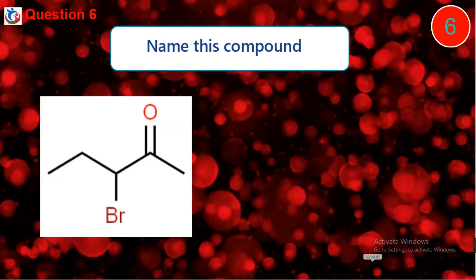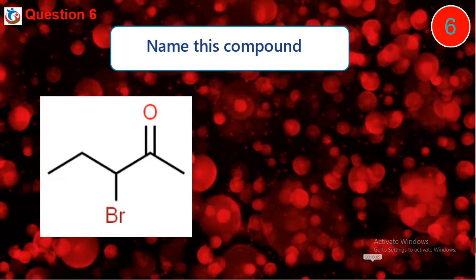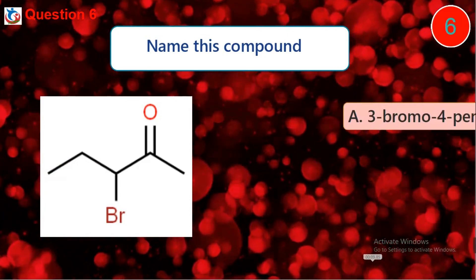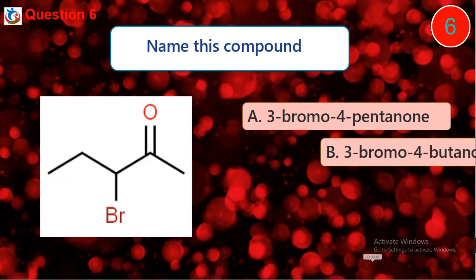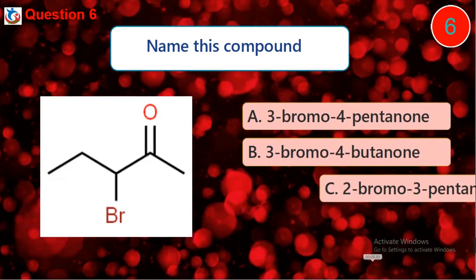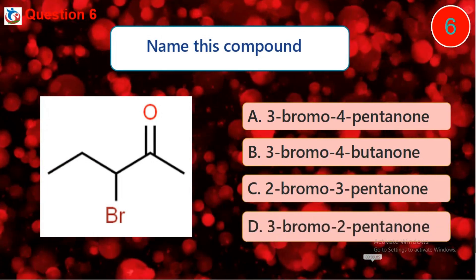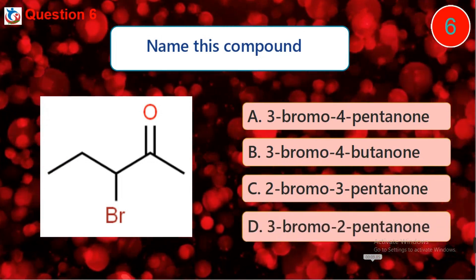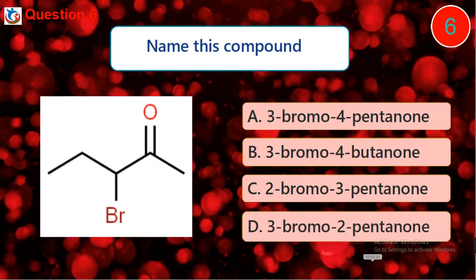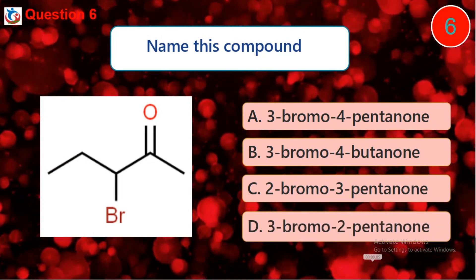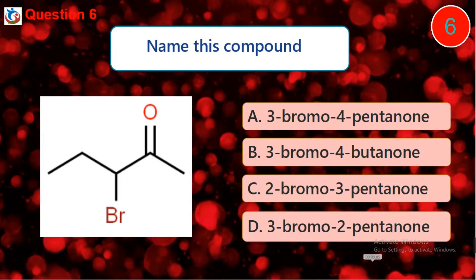Question 6. Name this compound. A. 3-bromo-4-pentanol. B. 3-bromo-4-butanol. C. 2-bromo-3-pentanol. D. 3-bromo-2-pentanol.